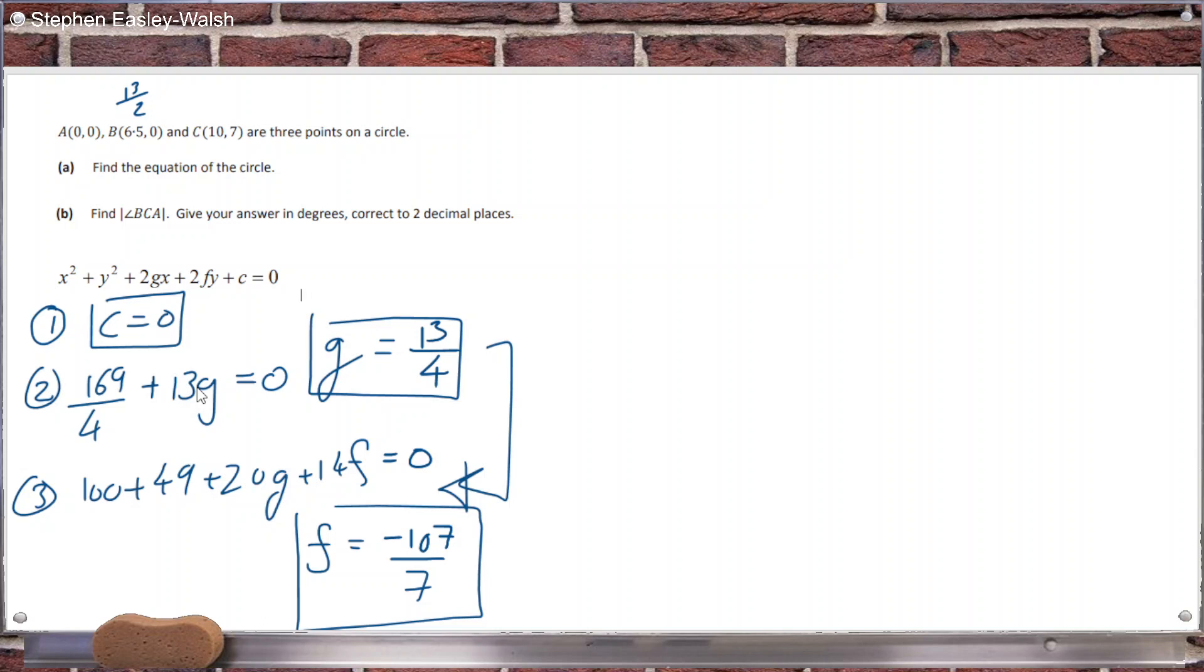Yeah, that's right. So the G is 13 over 4. But I'm not convinced by my weird looking F.